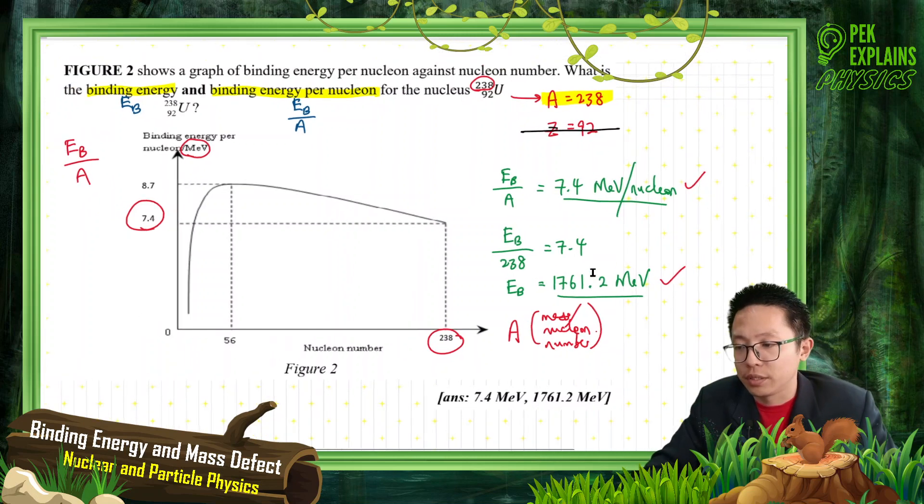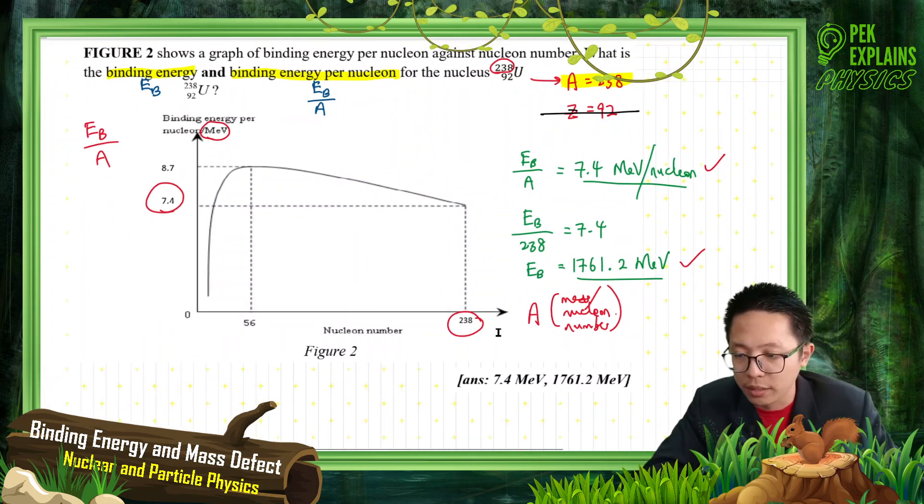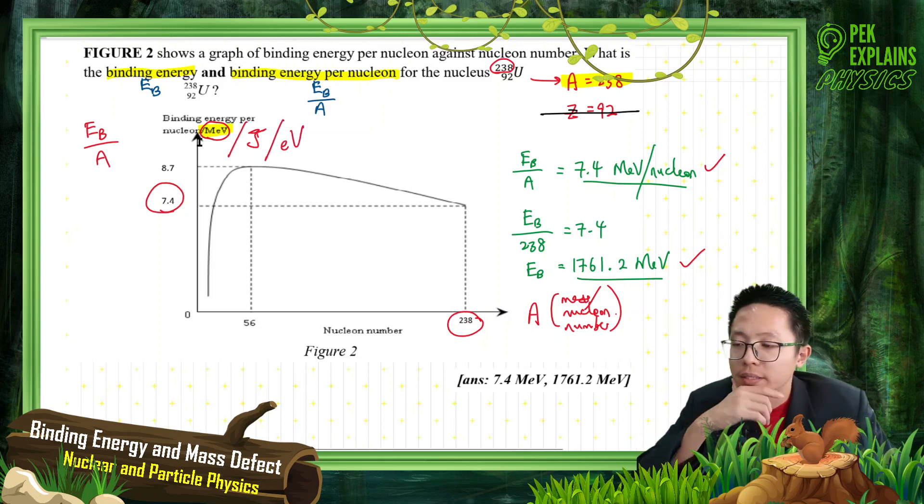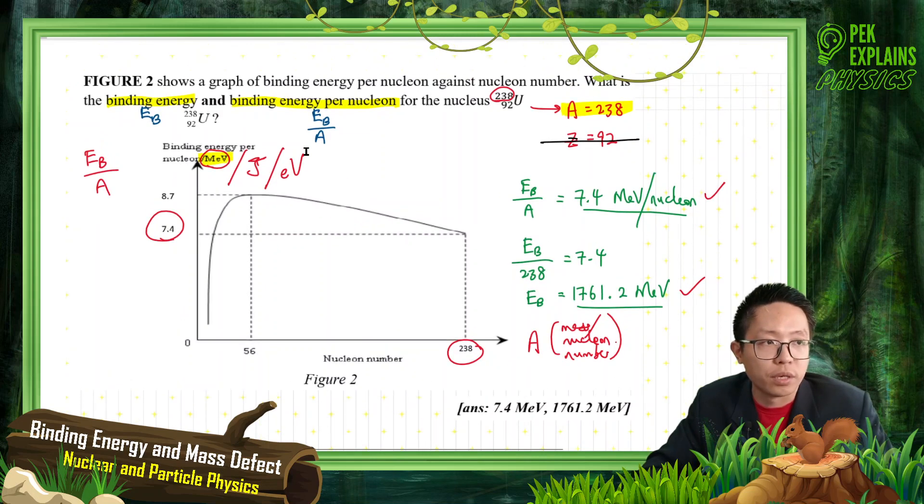So very simple questions. Important thing is you must know how to read the table. This one, the x-axis is the mass number, and this one is binding energy per nucleon. And be careful with the unit here. Sometimes it can be MeV, sometimes it can be Joule, or can be even only eV. So remember which one, is it MeV or Joule or electron volt? Be careful with the unit. Okay, so that's all for this question. See you in the next one.